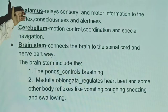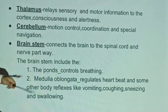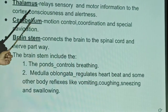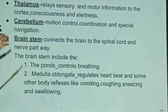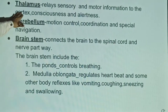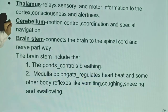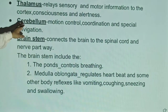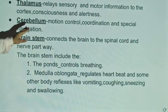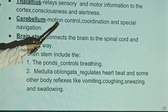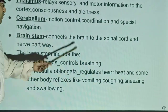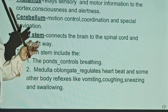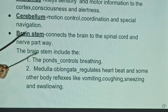The next part is the thalamus. The thalamus relays sensory and motor information to the cortex and provides alertness. The next part is the cerebellum, which handles motion control, coordination, and spatial navigation, maintaining the structure and posture of the body.